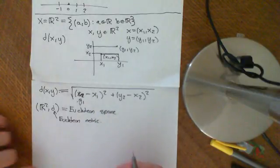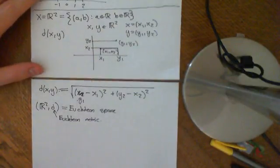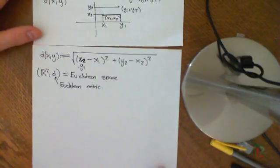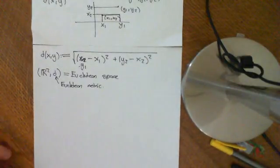And so this sometimes is called the Euclidean metric on R². And what we're going to see is that there are other metrics that you can define on R² which are non-Euclidean.